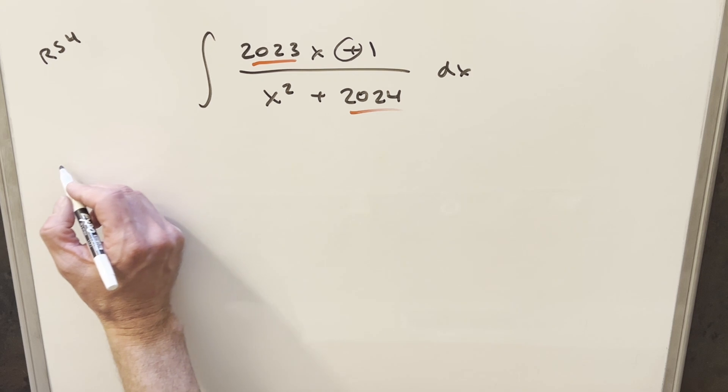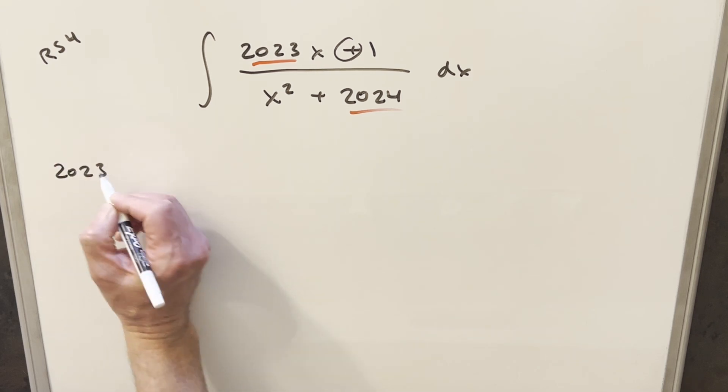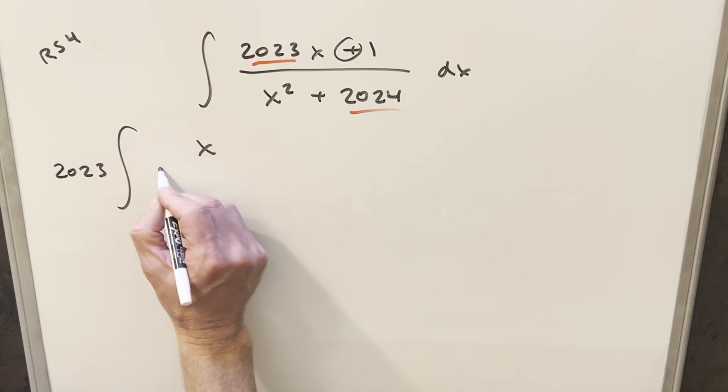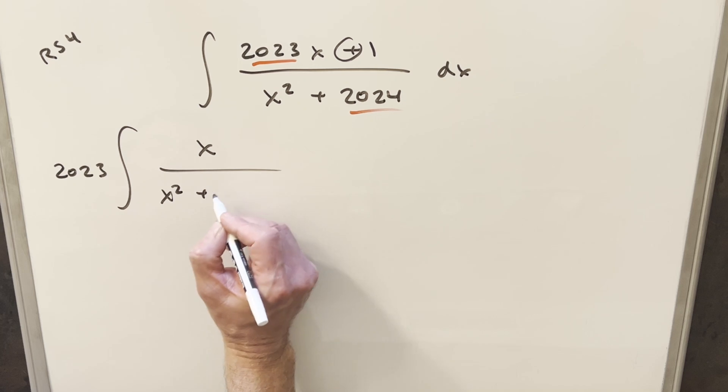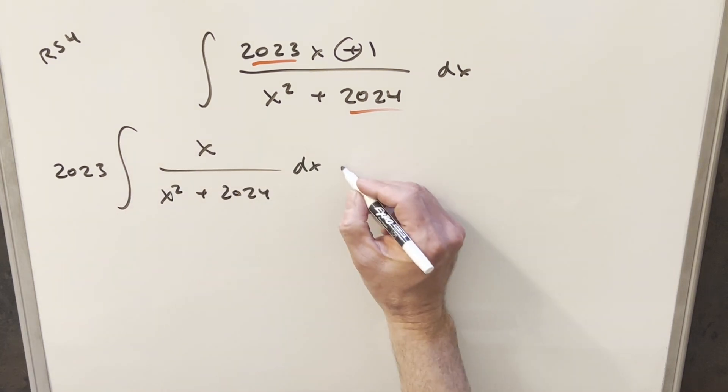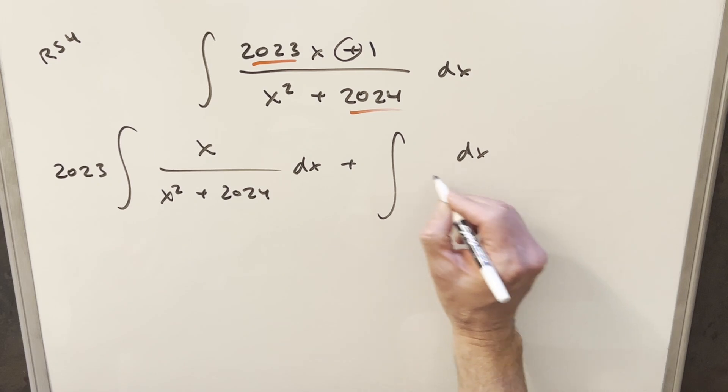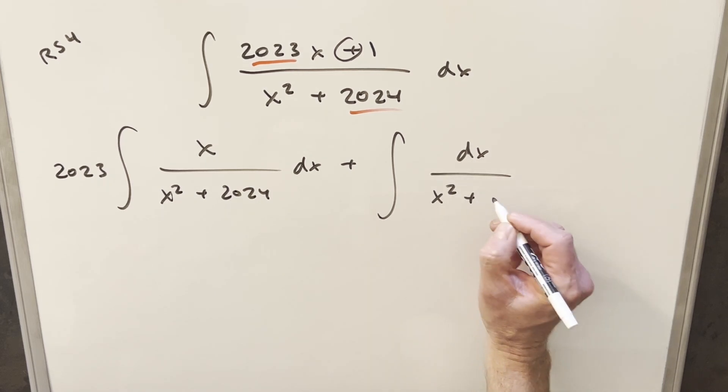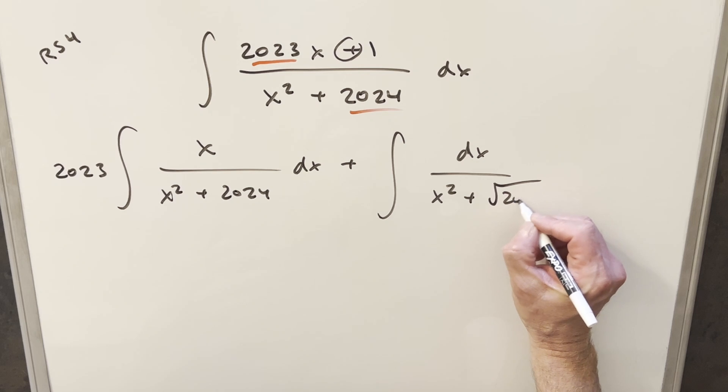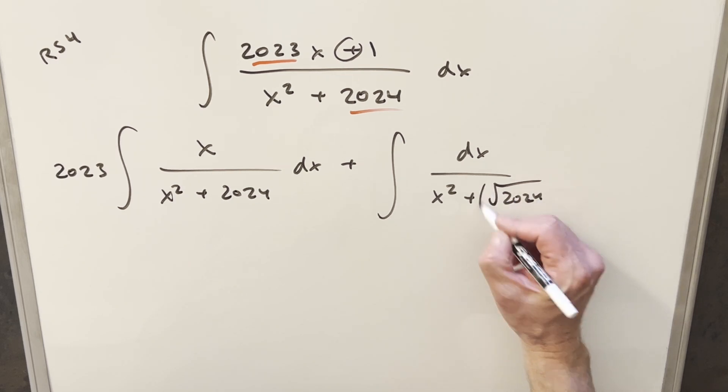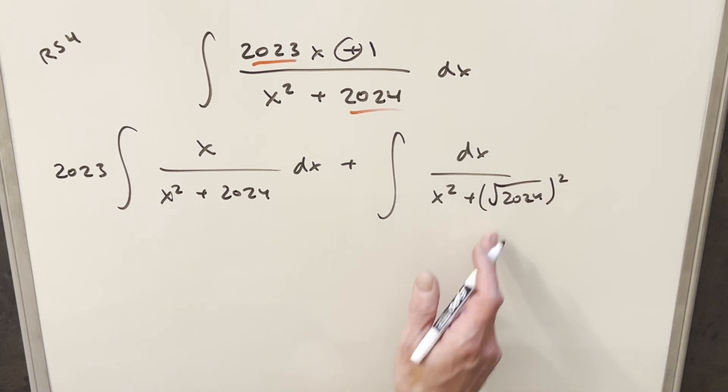So what I'm going to do is take this 2023 and bring it up front and just write it as x over x squared plus 2024. And for this second one, we're just going to have this one in the denominator. So I'm going to write this as dx over x squared plus 2024. But what I'm going to do here is write this as square root of 2024 all squared. I'm just setting up my Arctan formula for this second integral.